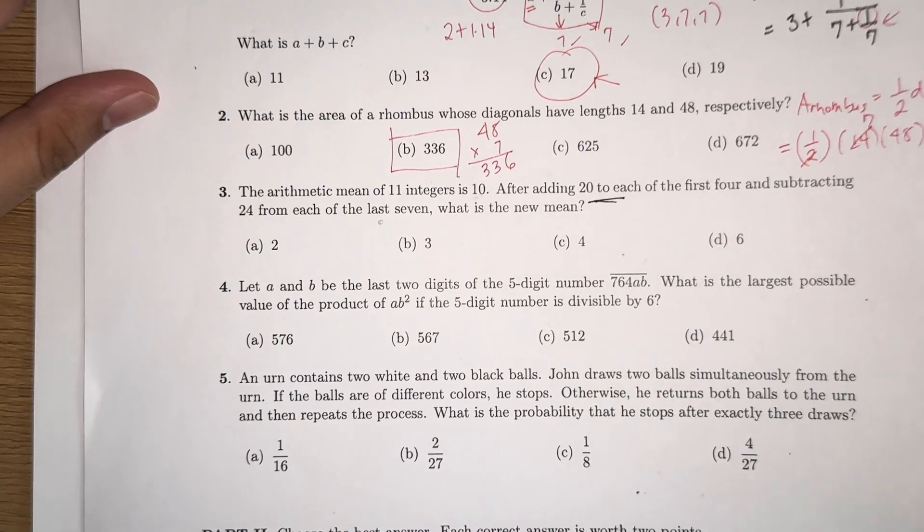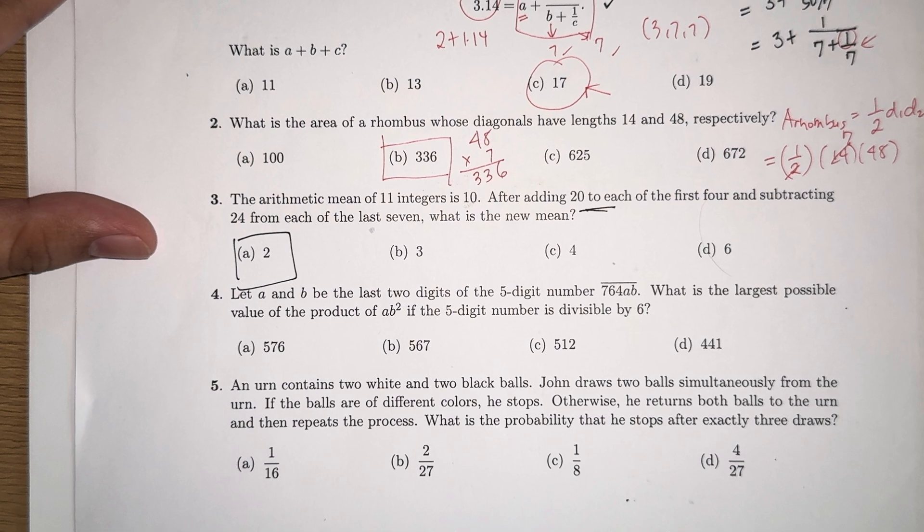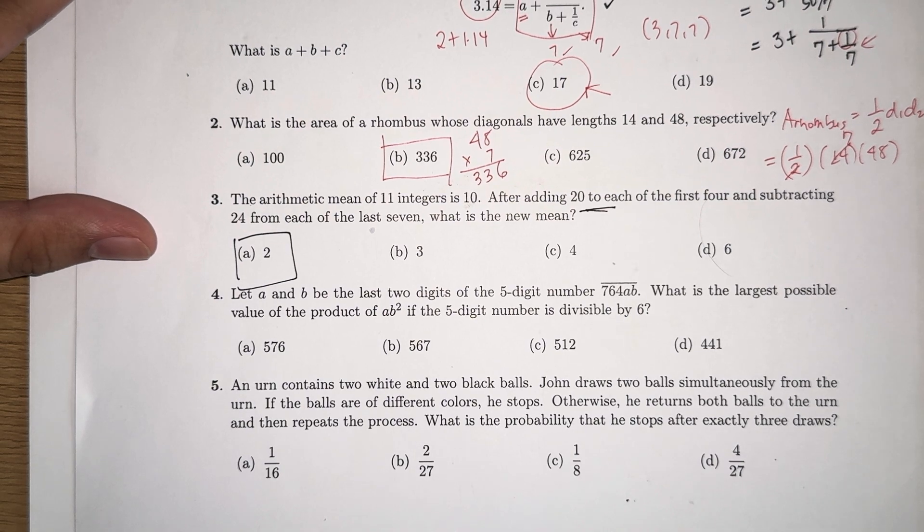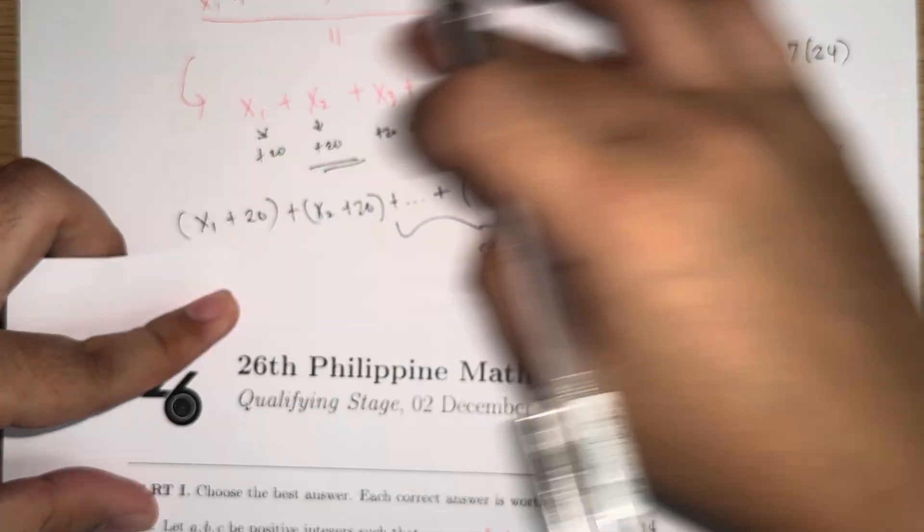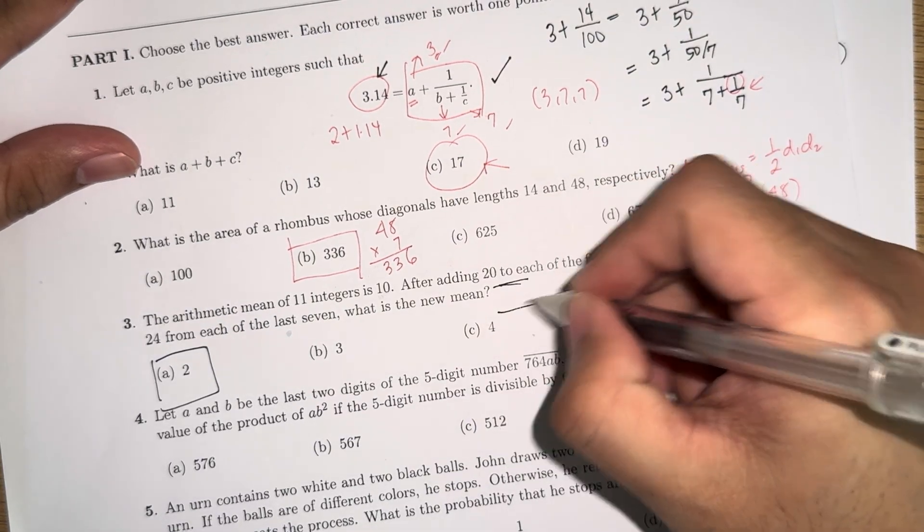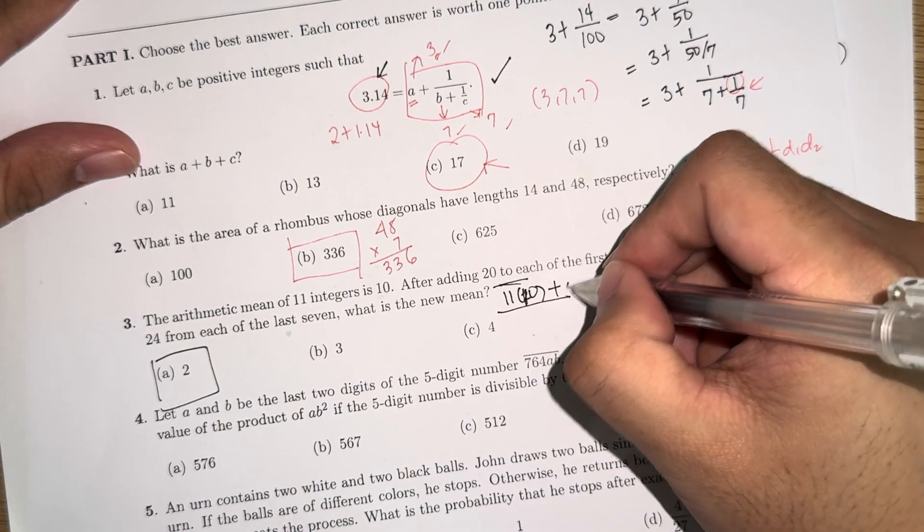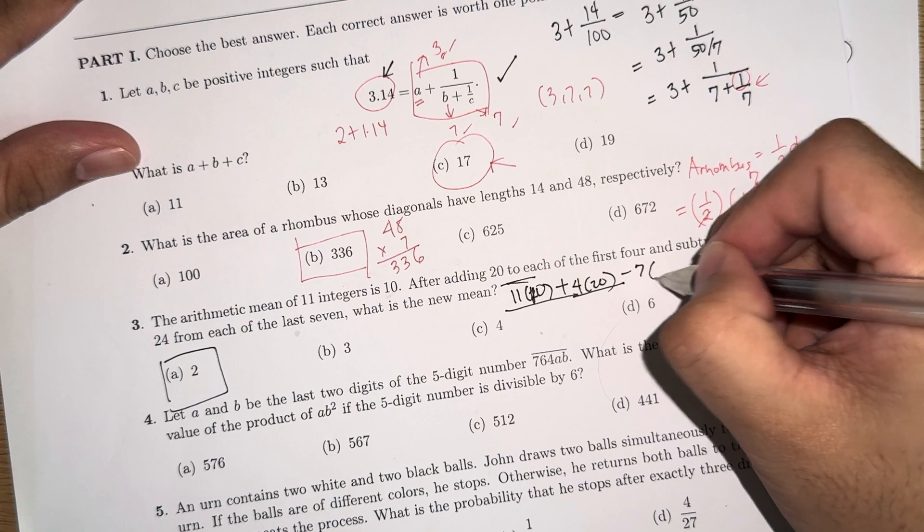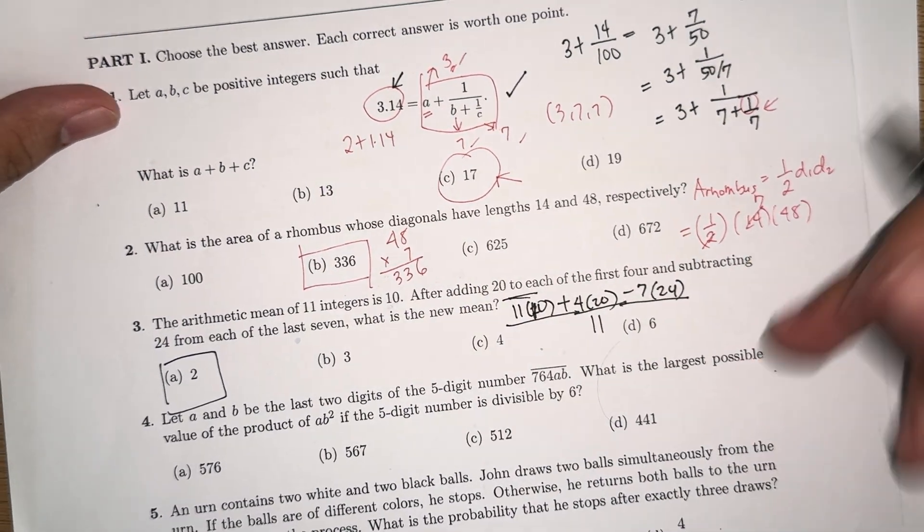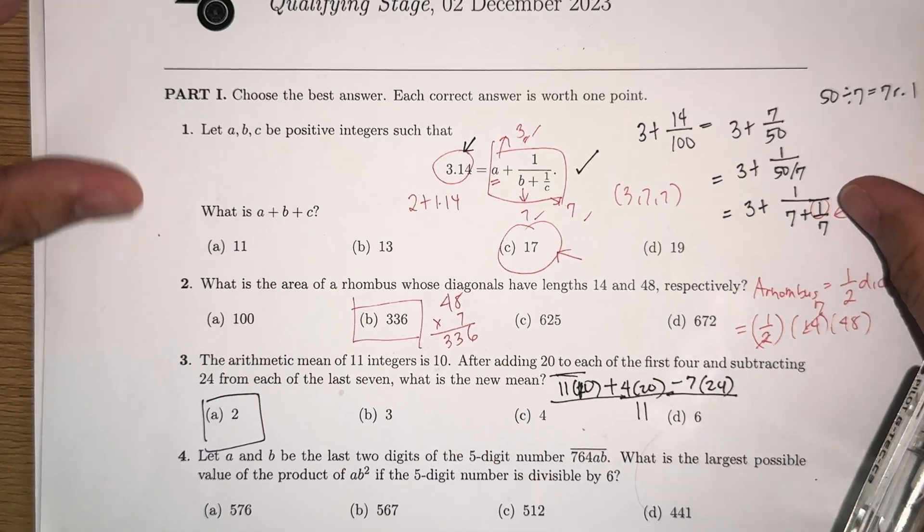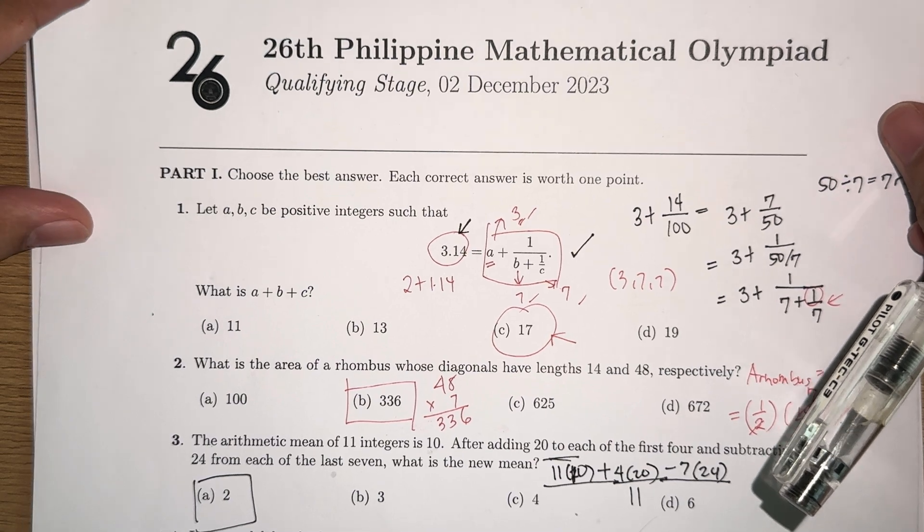Therefore, the answer to number 3 is 2. If you're already familiar with this method, you don't have to do all this, and just make the answer here equal to 11 times 10, plus 4 times 20, minus 7 times 24, divided by 11. That's the shortcut, if you're already familiar with the concept of the mean.